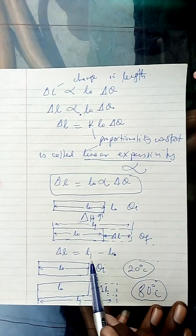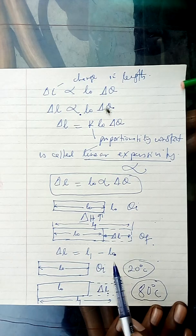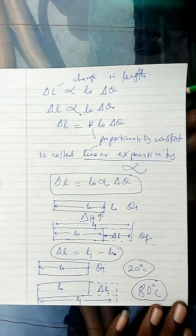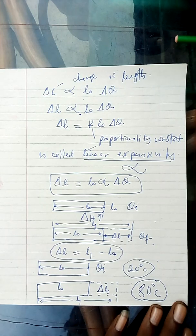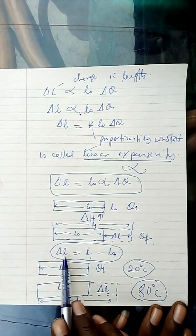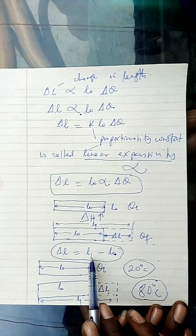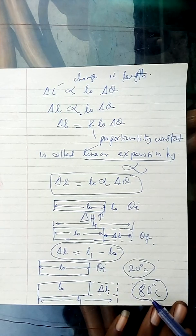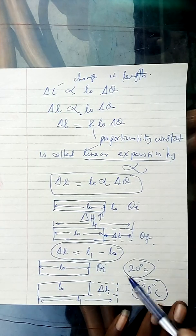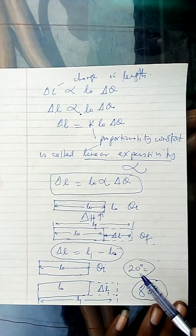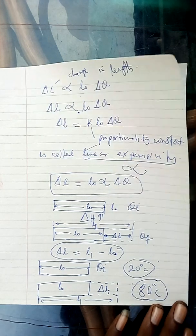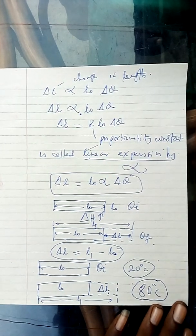Change in length — it is the new length minus the original length. Change in length is equal to the new length formed after you increased the temperature, that is the new length according to the new temperature, minus the length that was there before. Therefore, if that is the case...